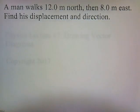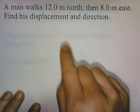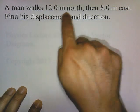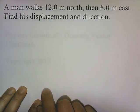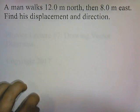A man walks 12 meters north, then 8 meters east. Find his displacement and direction. We'll first start by drawing a 12 centimeter line pointing north to represent the first vector — 12 meters north — so we draw a 12 centimeter line pointing straight up.